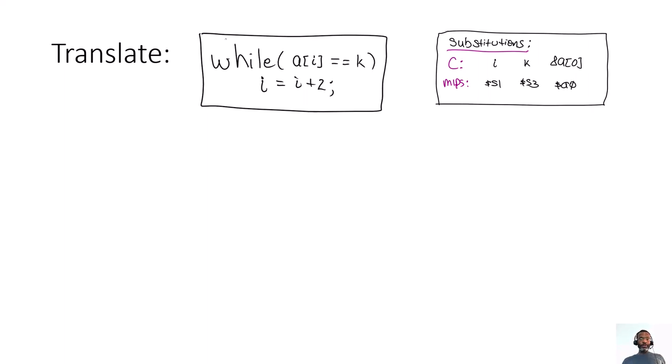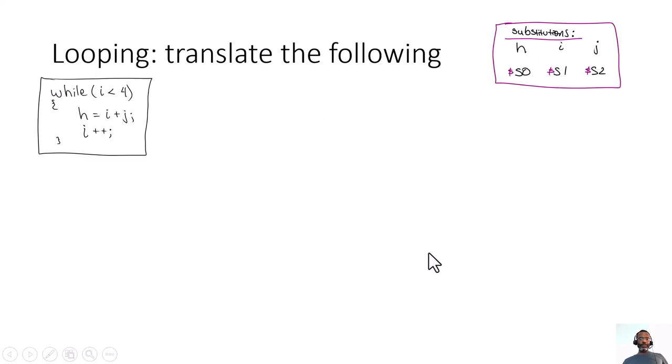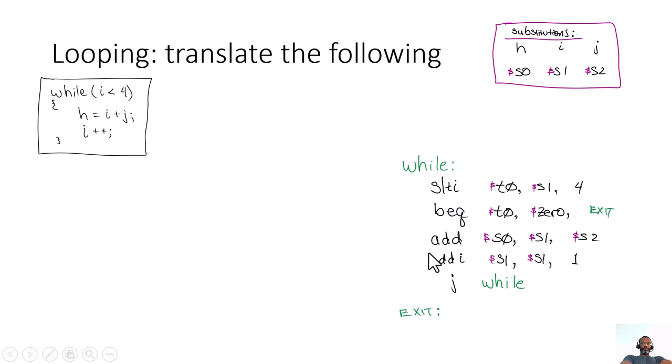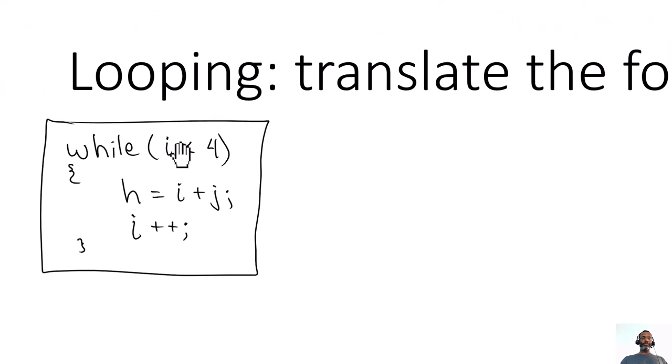Alright, so in the previous video clip we had a chance to see how we can do simple loops. We saw how we can do a simple comparison and then we could jump based on the results of that comparison, and it could be an equality or inequality. We could check to see if i is equal to 4, i is not equal to 4, i less than 4, or i greater than or equal to 4.